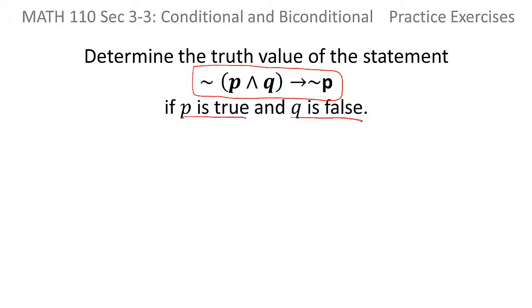We want to take the information they gave us and actually apply it into that expression, that logical statement. Since I know that P is true, I'll plug T in place of P. And since I know Q is false, I'll plug F in for Q.